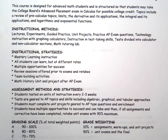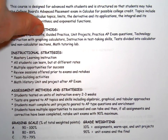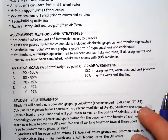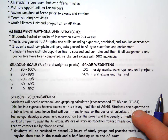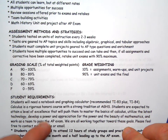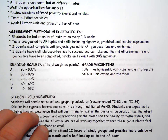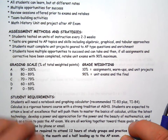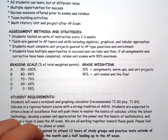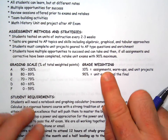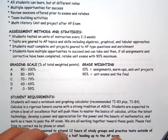Students must complete unit projects geared to AP-type questions and enrichment. Students have multiple opportunities to succeed. If all assigned corrective work has been completed, you can retake exams with a 90% maximum — which is probably as high or higher than you've experienced in previous math classes. I'll even have students who get over 90% who want to retest. At the end of the semester I'll give one retest with full credit if you're already over 90%, and the better you do on a retest, the better you'll do in the next chapter — and it all goes toward the AP test in May.